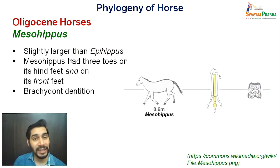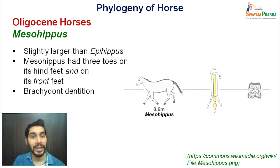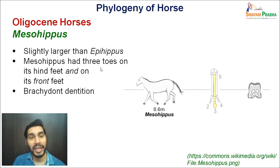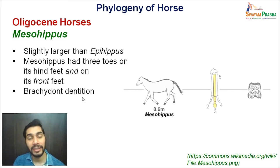Mesohippus was slightly larger than Epihippus, the previous form. It had three toes on both its hind feet and its front feet — a change from earlier forms that had four in the forefronts and three in the hind feet. They also had brachydont dentition, so dentition had not changed yet; they were still browsing types. You can see the size has increased from 0.4 to 0.6 meter.